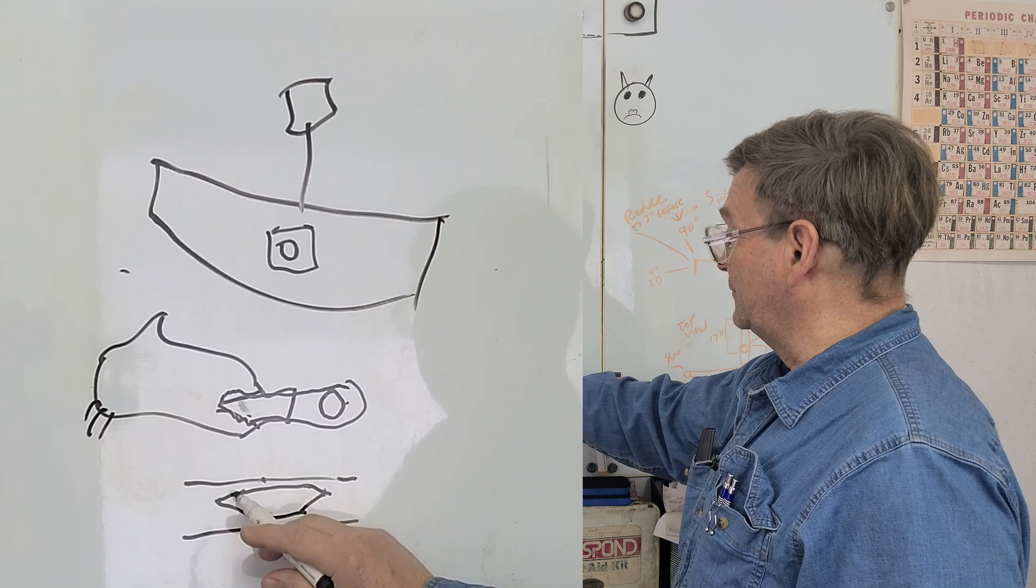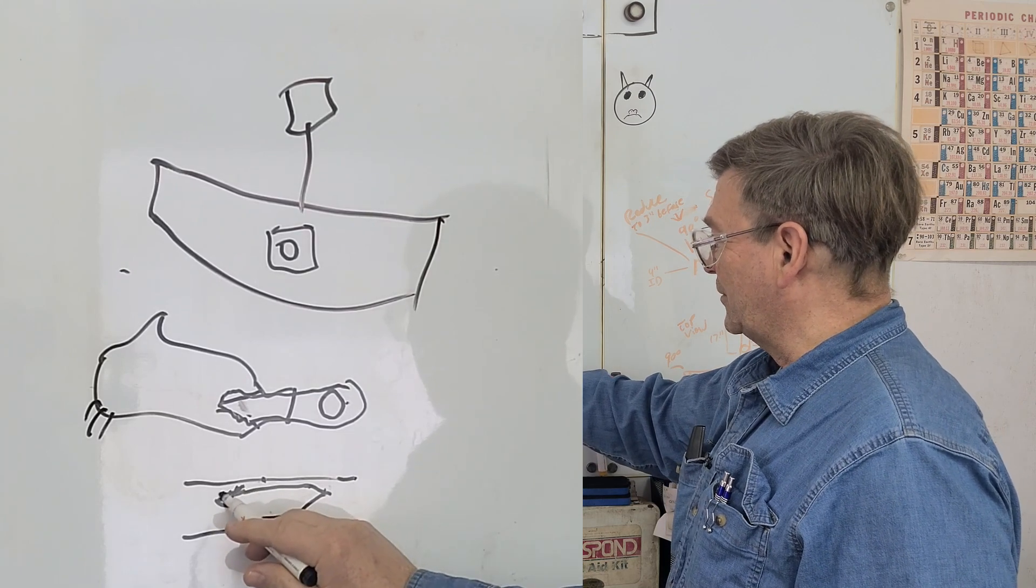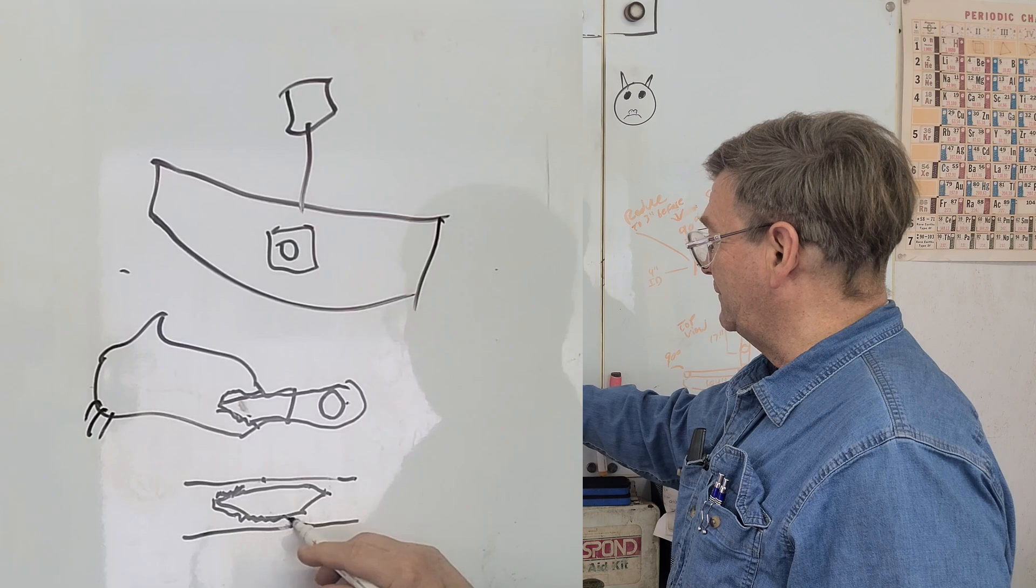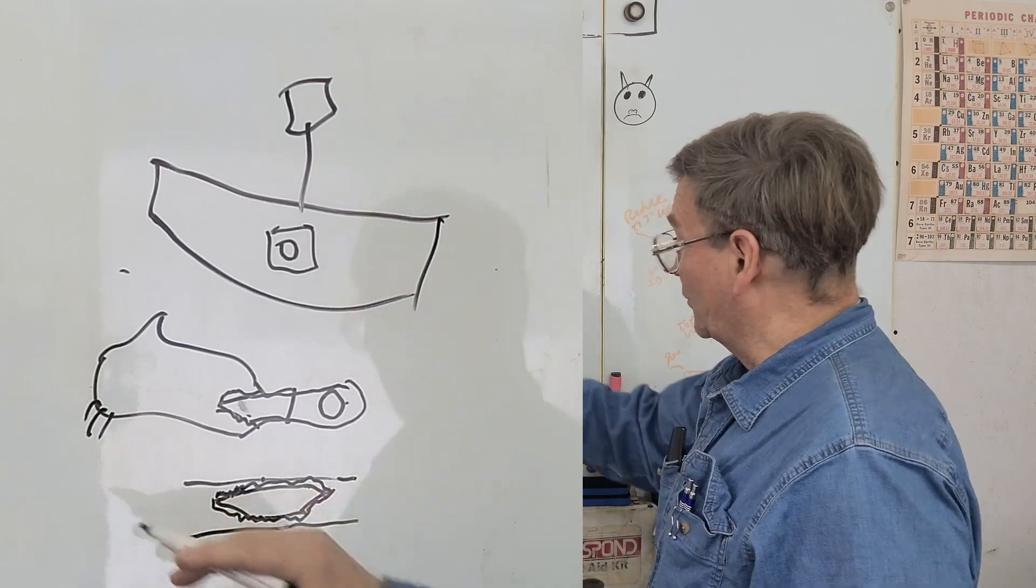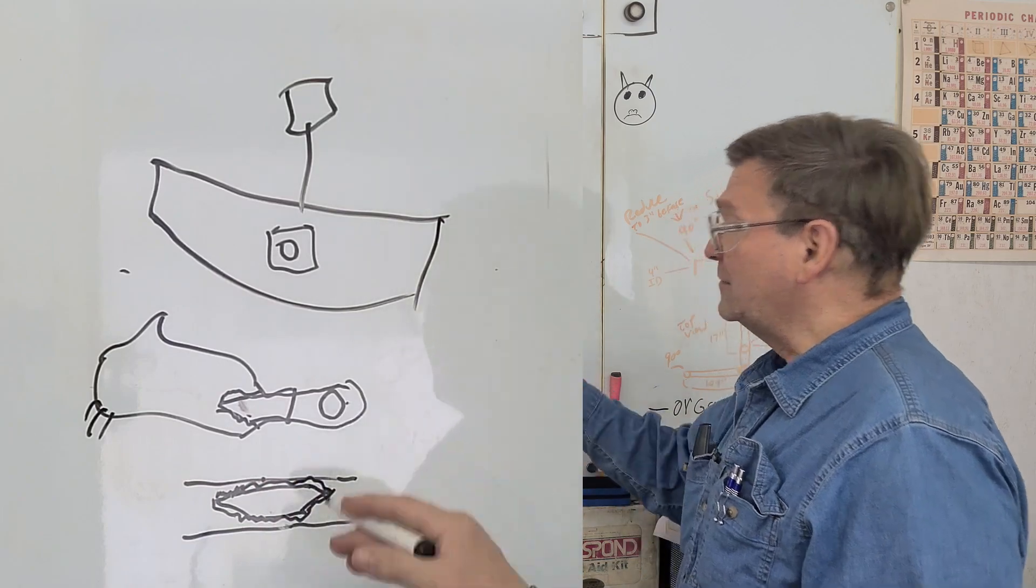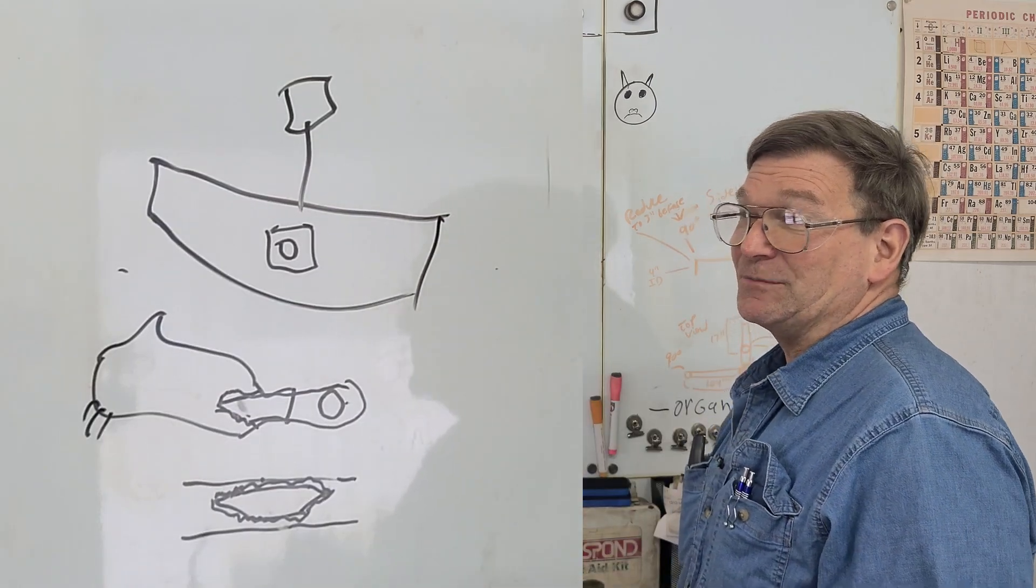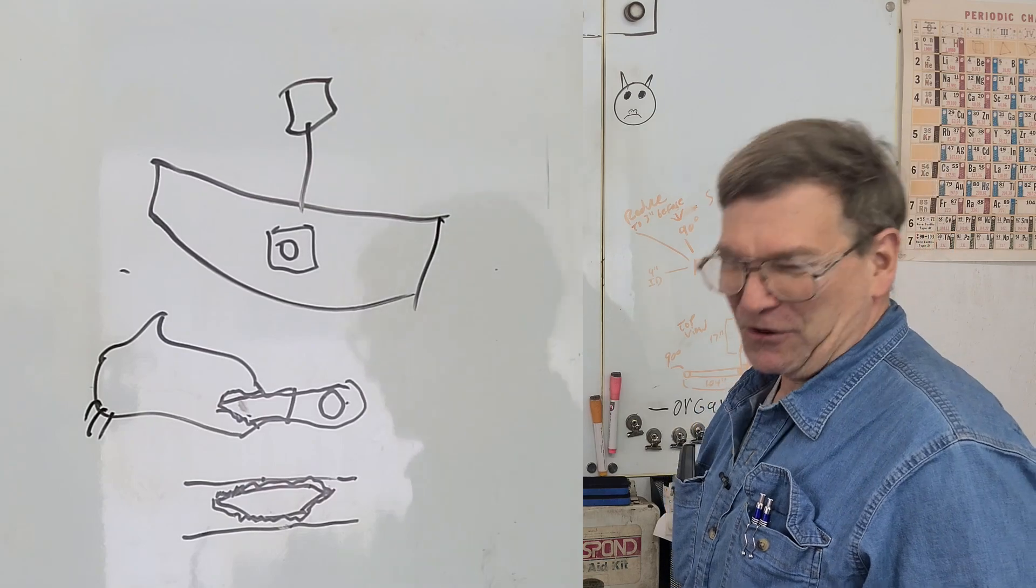So you'd have a plate like this. The reason for the little angles on the end, and that's part of where it has its name, is so that you can give it extra weld all the way around. So that you're catching more material.